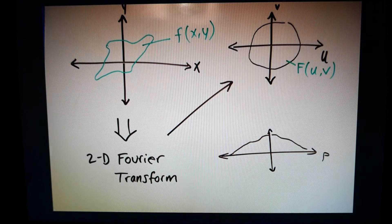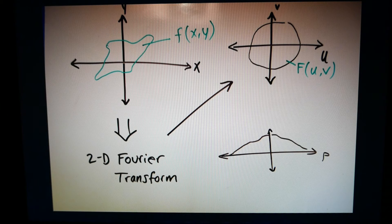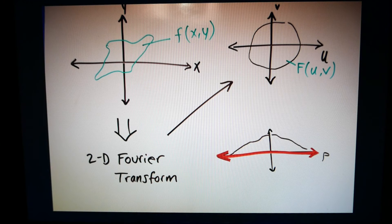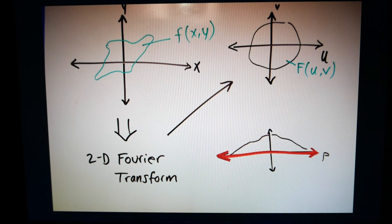The central slice theorem, which is crucial to our understanding of the Fourier transform, tells us that the 1D Fourier transform of the projection of an image is the exact same as the values of the 2D Fourier transform of the object along the line drawn through the center of the 2D Fourier transform plane.